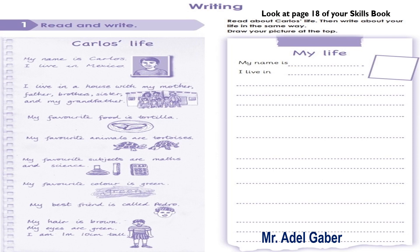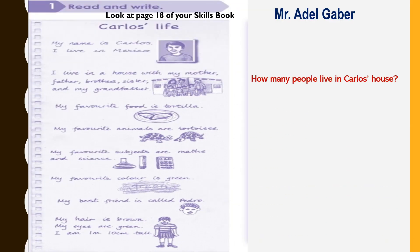Look at page 18 of your skills book, activity 1, read and write. Look at Carlos's writing. Carlos has written some information and then drawn some pictures about his life. Read the different sentences about Carlos's life. How many people live in Carlos's house?